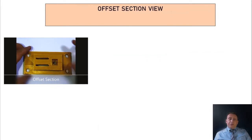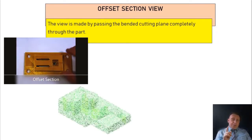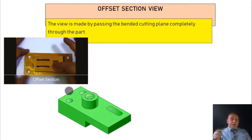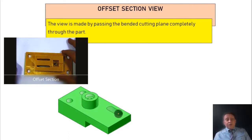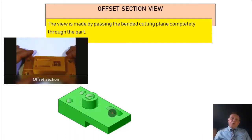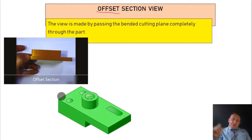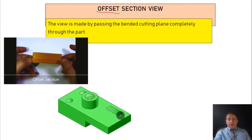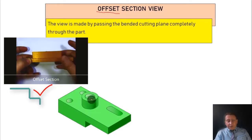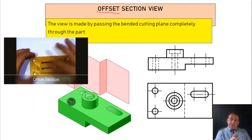Now we have another type called offset section view. The view is made by passing a bent cutting plane completely through the part. In this case, we bend the cutting plane line 90 degrees. Remember, you cannot bend it at 45 or 30 degrees, and you cannot use arcs — you must always use straight lines at 90 degrees and pass through the features. With my 3D printed part, I have different features and it is impossible to pass one full section through all of them, so we bend the cutting plane line through each feature individually.